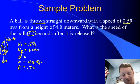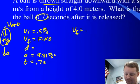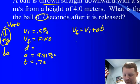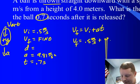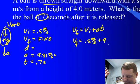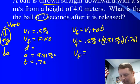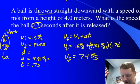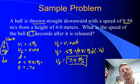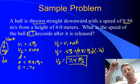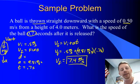Looking for vf, knowing vi, a, and t, we can use vf equals vi plus a*t: vf equals 0.5 meters per second plus 9.81 meters per second squared times 0.7 seconds, giving vf equals about 7.4 meters per second. It makes sense that the final velocity is greater than the initial velocity — if you throw it down with a little bit of speed, as it travels further vertically downward it increases in speed because it's accelerating toward the center of the Earth.